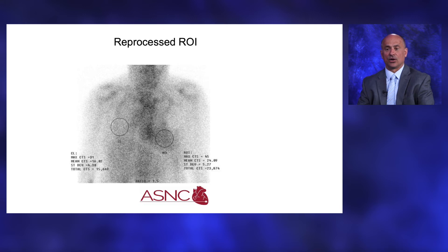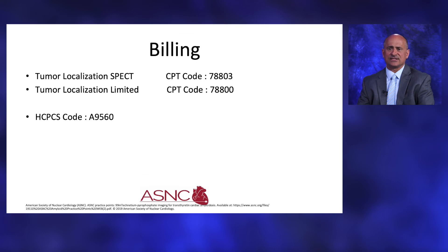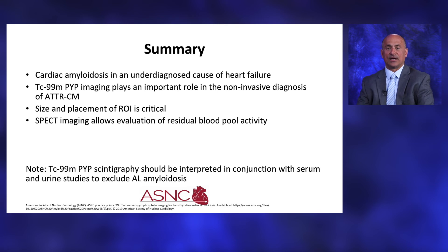The ASNC practice points suggest billing codes for this procedure. Tumor localization or distribution of a radiopharmaceutical SPECT is CPT code 78803, and tumor localization or distribution of a radiopharmaceutical limited is CPT code 78800. In summary: cardiac amyloidosis is an underdiagnosed cause of heart failure; TEC-99M PYP imaging plays an important role in the noninvasive diagnosis of ATTR cardiac amyloidosis; the size and placement of the region of interest is critical; and SPECT imaging allows evaluation of residual blood pool activity.